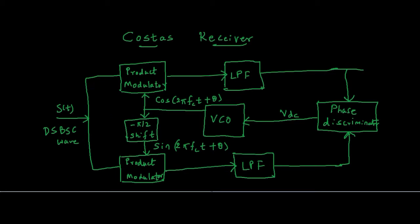This receiver will generate a carrier which is used to demodulate S of T. Finally, what we need is a message signal out of this DSBSC wave. Since double sideband suppressed carrier wave doesn't have the carrier, we need to generate it at the receiver — then only we can demodulate the signal.